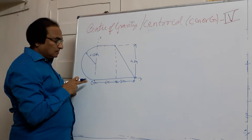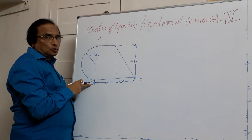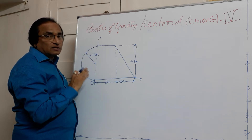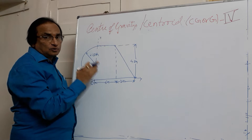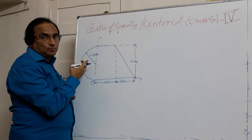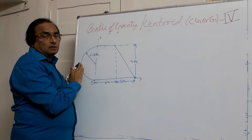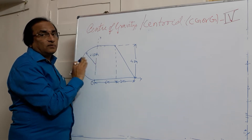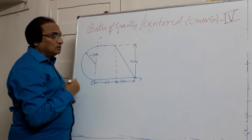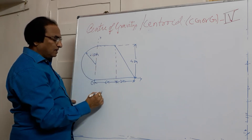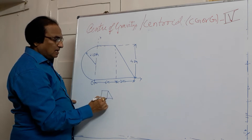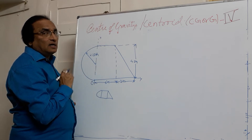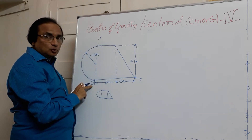In this problem, you are required to locate the centroid of the figure with respect to O. Whenever such problems come, you should be careful in which quadrant the figures are lying. In the first quadrant, both X and Y are positive. In the second quadrant, X is negative and Y is positive. Based upon the location of the quadrant, you'll have to decide the signs for the coordinates for each component area. Now, if you want to find the centroid of this figure, we have got three figures, and the location of the centroid will be with respect to O.